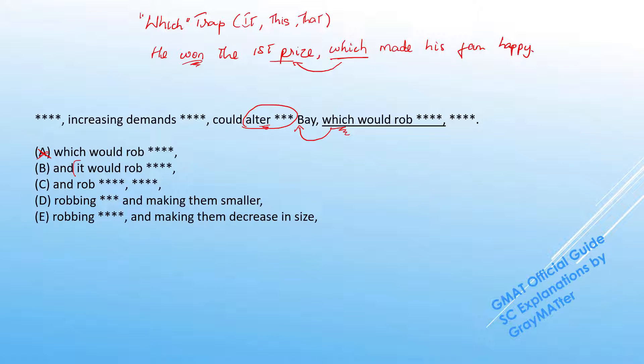Now B has the pronoun it. So instead of which, it's now an it and it would rob. So what would rob the flavor? It's the alteration of the saline content, correct? So once again, we have the pronoun it referring back to an action and that doesn't work.